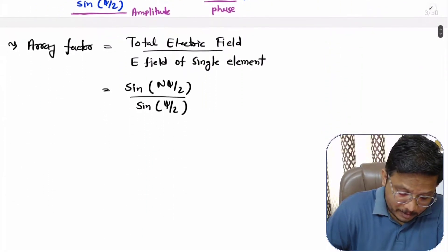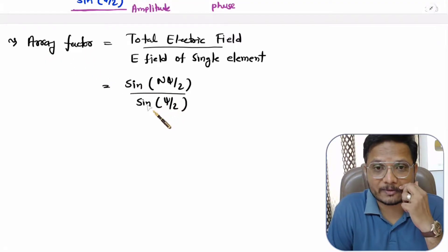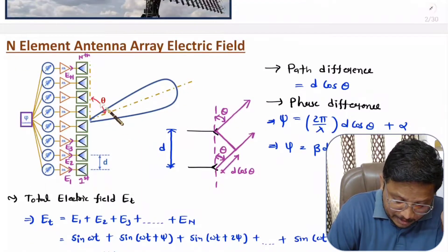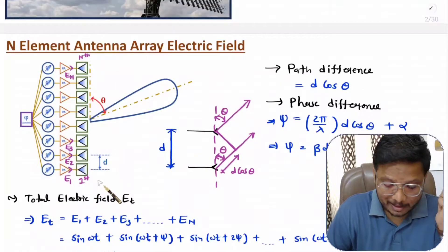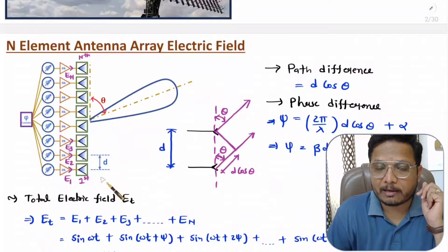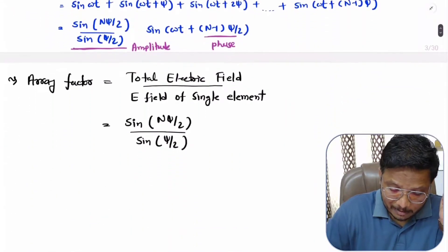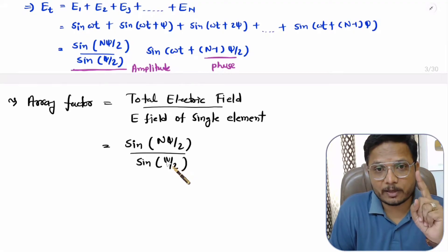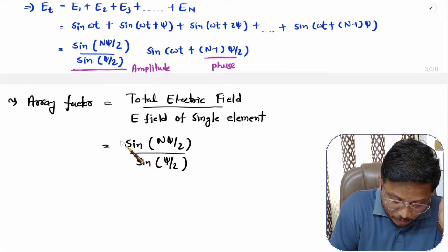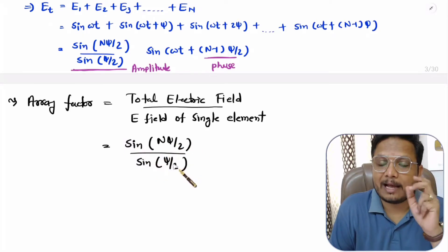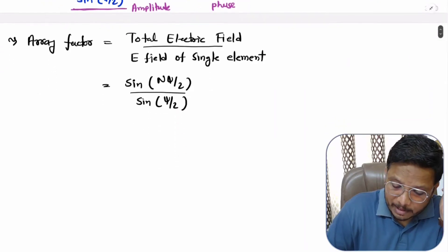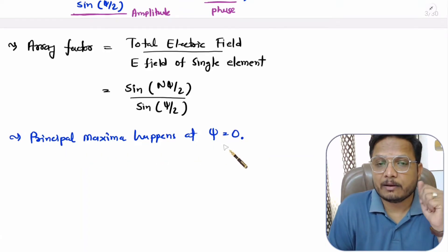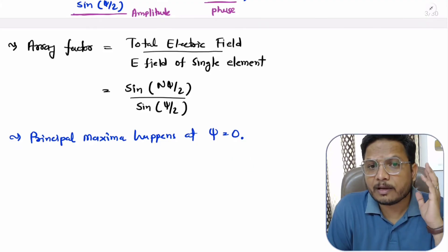This array factor explains how radiation happens. We have considered radiation happening in a direction making angle theta with respect to the axis of the antenna array. The principal maxima happens at the angle theta where the value of ψ equals 0. The maximum value of the array factor occurs when ψ equals 0. So, the principal maxima happens at ψ equals 0, and based on this principal maxima, we can identify many other parameters of antenna array.